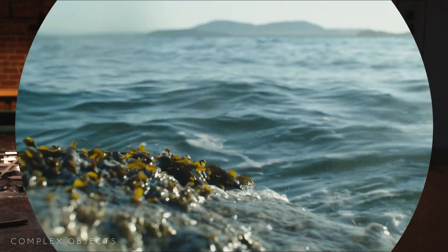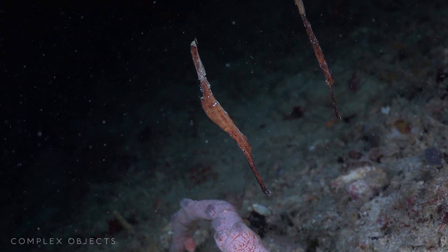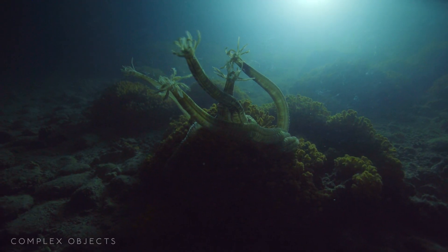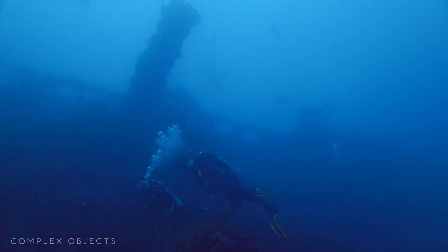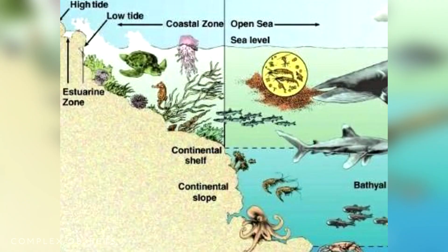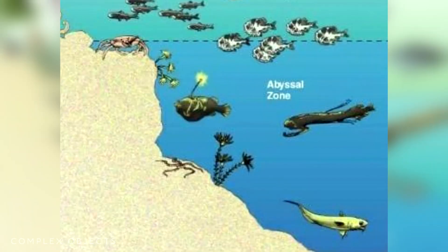What's common to all these situations? What's causing these ecotones to form? The first thing is microclimates. What happens as you go deeper into the ocean? It's getting darker, it's getting colder, the pressure is increasing, the salinity is changing, and even the oxygen concentration is changing. These are called ecoclines — changes in the physical and chemical properties of the environment over space.